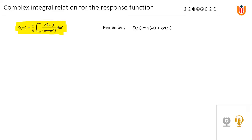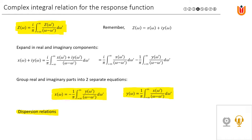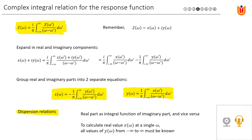Z(ω) is a complex function with real part x and imaginary part y. We can expand this integral in real and imaginary components. Noting that the imaginary number i multiplied by itself equals minus one, we get this integral expression. Grouping the real and imaginary parts into two separate equations, we obtain the so-called dispersion relations: the real part expressed as an integral of the imaginary part, and the imaginary part as an integral of the real part. To calculate a single value of x(ω) at any frequency, all values of y(ω) must be known over the whole domain from minus infinity to infinity, and the same holds for the imaginary part.